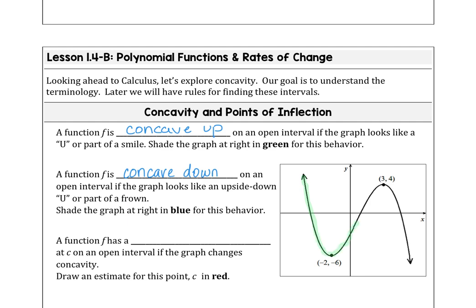Somewhere in here it's going to turn and become concave down — shade that in blue for concave down. So somewhere over here we're concave down. Our point of inflection — I've done the calculus part on that — the point of inflection is right here and it's the ordered pair (1/2, -1). This is called the point of inflection where the graph turns from being concave up to concave down or vice versa. They want us to draw the estimate in red.